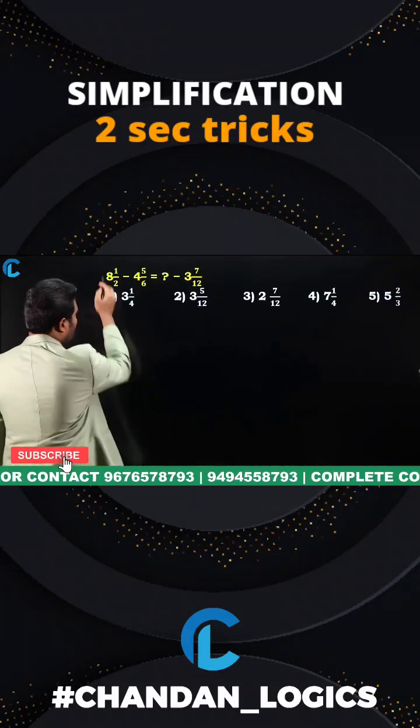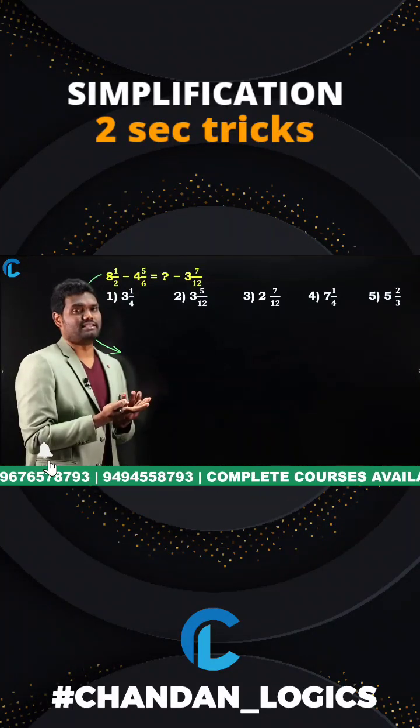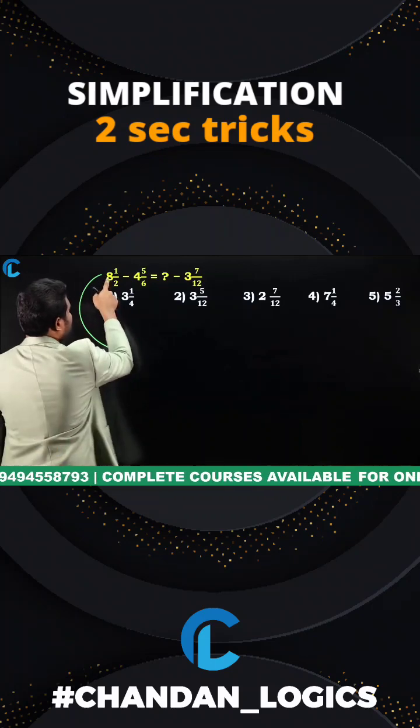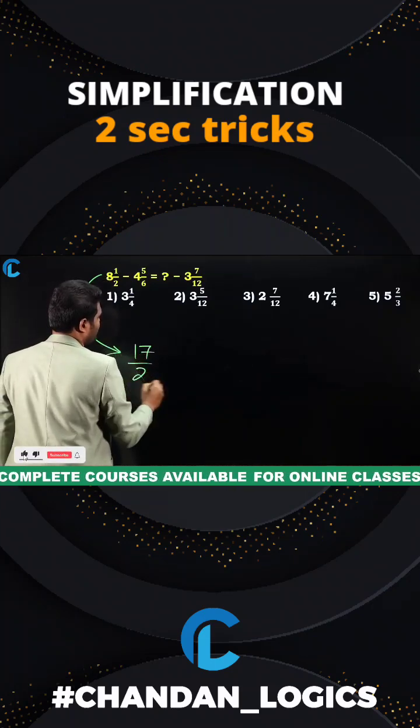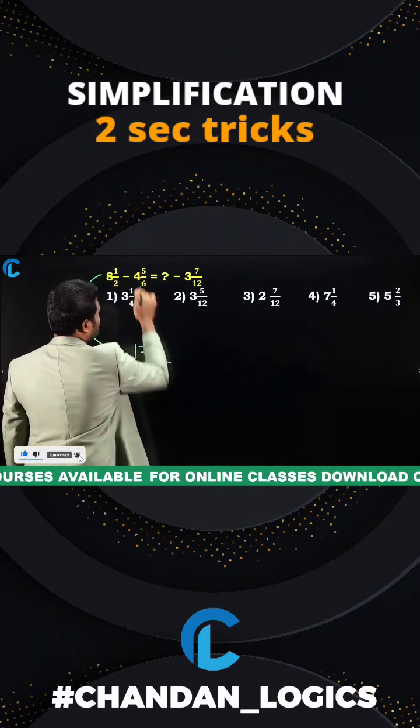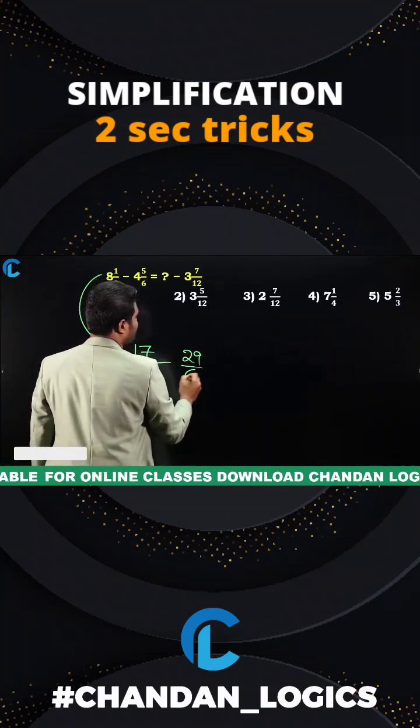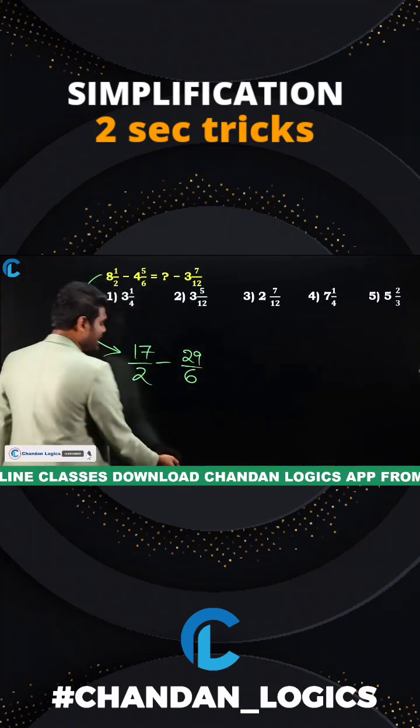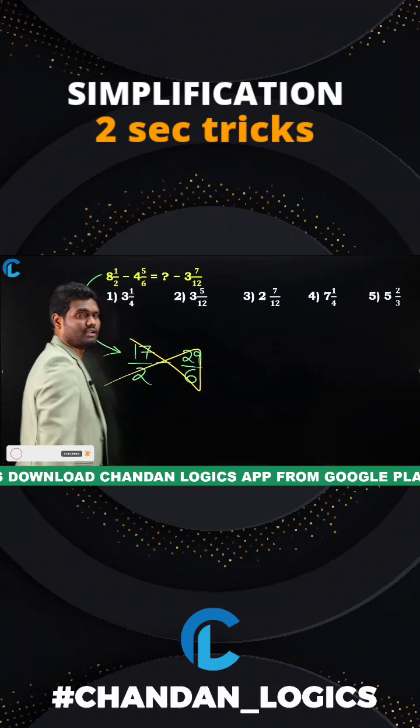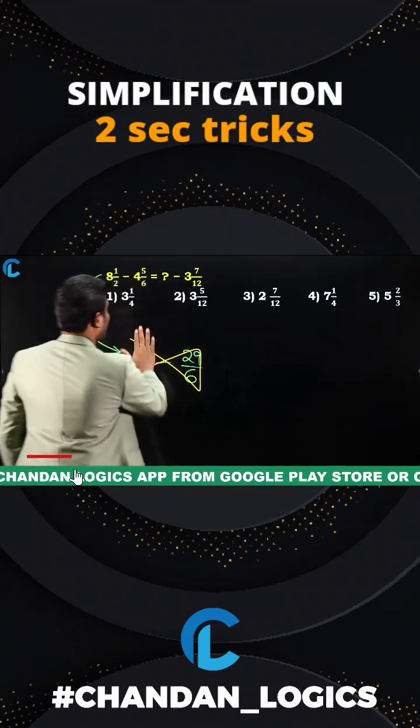Now actually don't try to simplify it. So many students what they will do is they will try to simplify this. When you simplify this what happens? 8 times 2 is 16, 16 plus 1 is 17, 17 by 2, yes or no? Minus 4 times 6 is 24, 24 plus 5 is 29, 29 by 6. But when you're trying to simplify it, unnecessarily you're trying to make calculations complicated, yes or no?